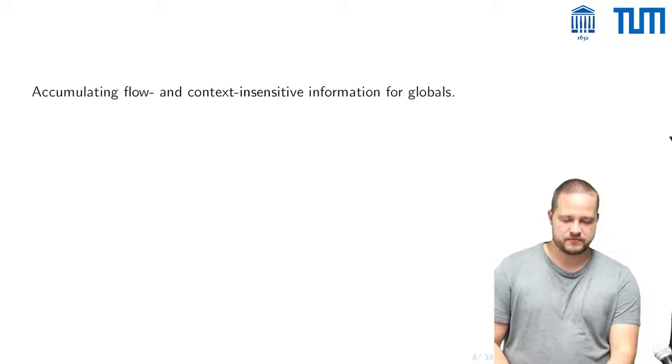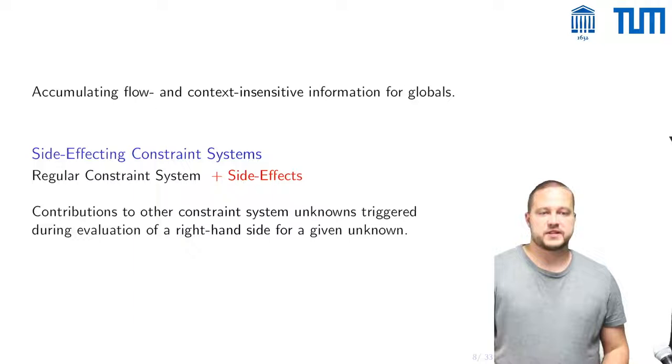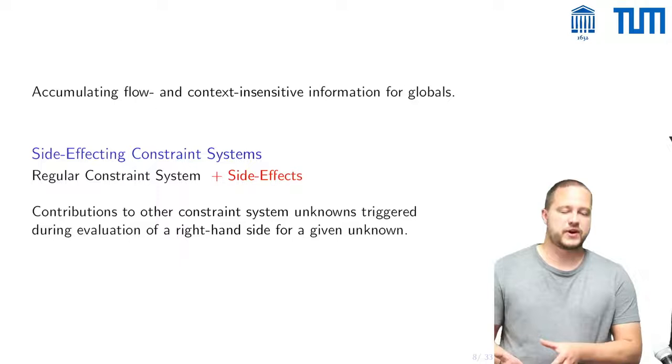A very convenient way to formalize this is by using what's called side effecting constraint systems, so these are regular constraint systems that are then enhanced with side effects. What are side effects? They are contributions to other constraint system unknowns that are triggered during the evaluation of a right-hand side for a given unknown.